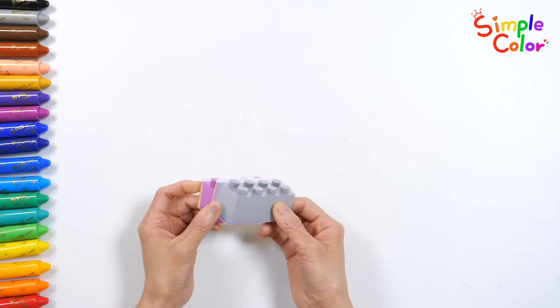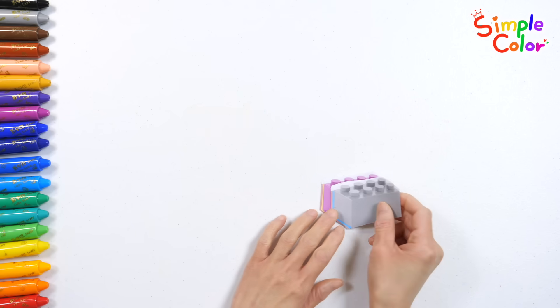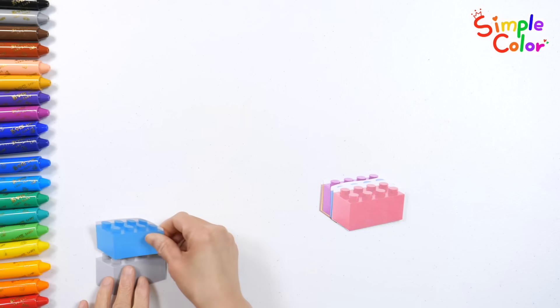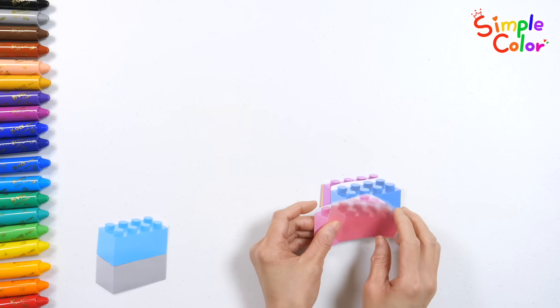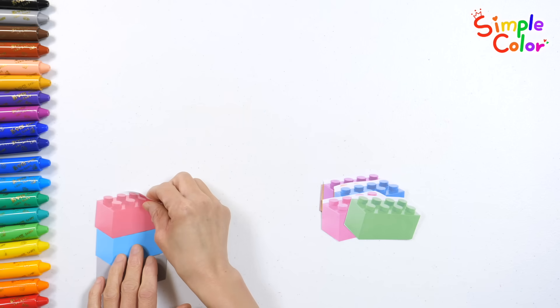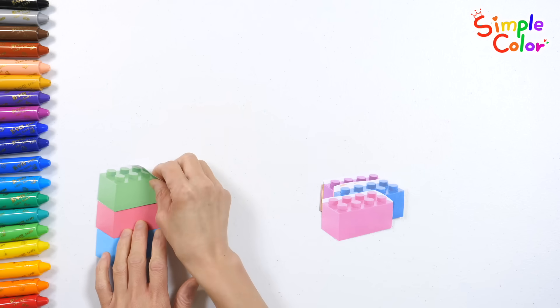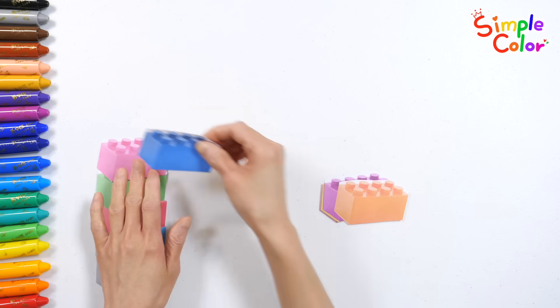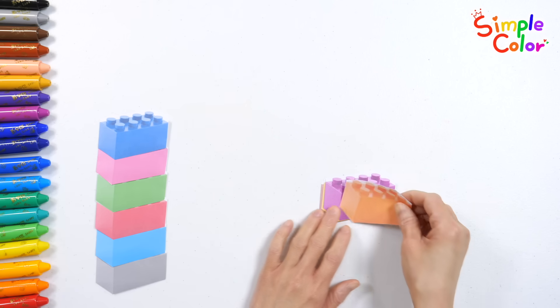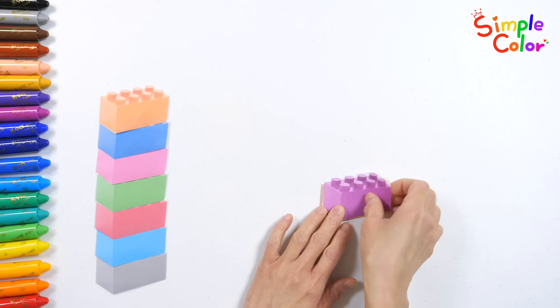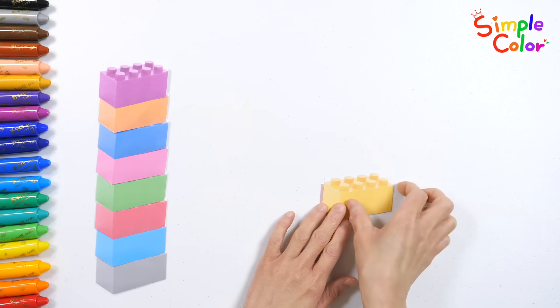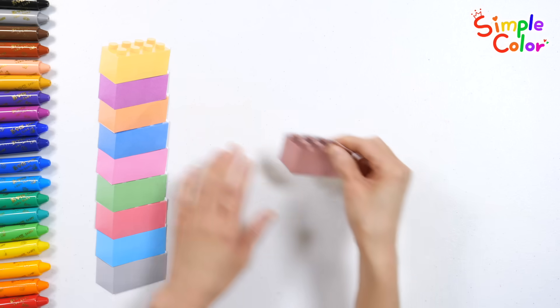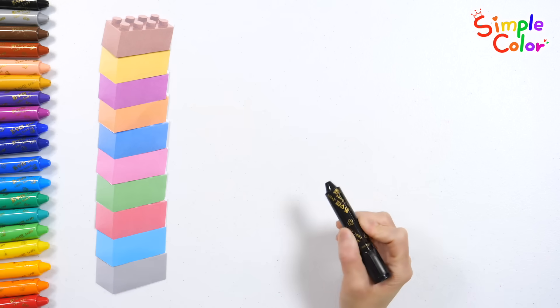Wow! Let's stack the blocks one by one and say their colors. Gray block. Sky blue block. Red block. Green block. Pink block. Blue block. Orange block. Purple block. Yellow block. Brown block. Let's count the blocks.